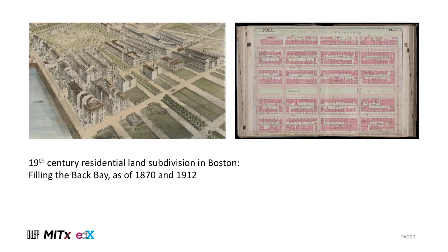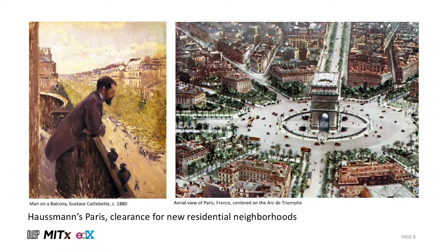From the early platting of Brooklyn Heights in 1820, to the landfill development of Boston's South End and Back Bay during the second half of the 19th century, early urban land subdividers offered relatively narrow lots with row houses. In Paris, between 1853 and 1870, Napoleon III and his prefect Haussmann cleared great swaths of the city occupied chiefly by the working class, replacing tangled medieval streets with wide boulevards flanked by multi-story dwellings for wealthier households.